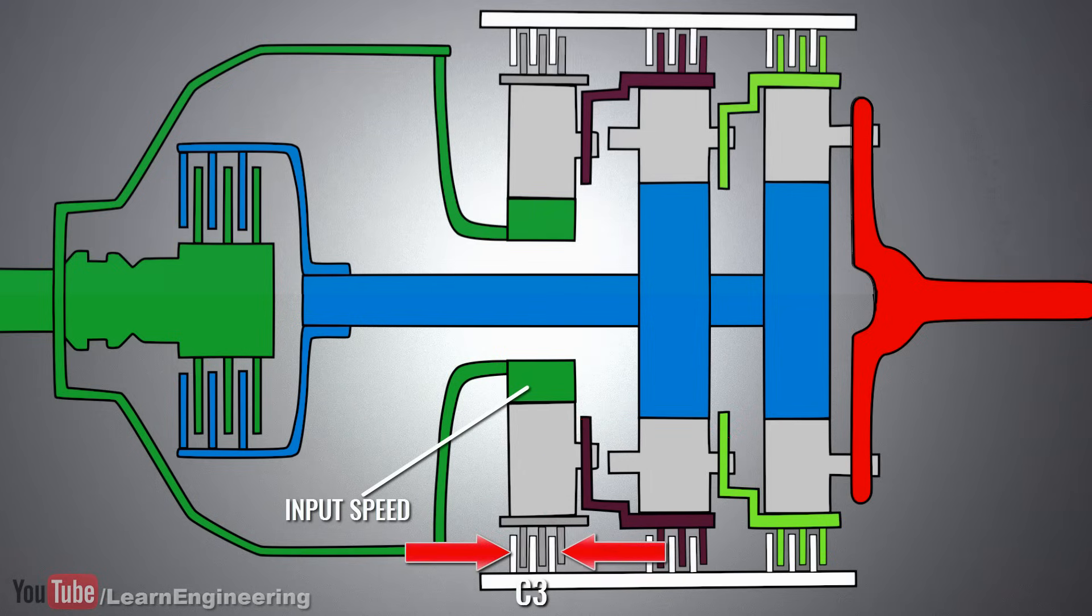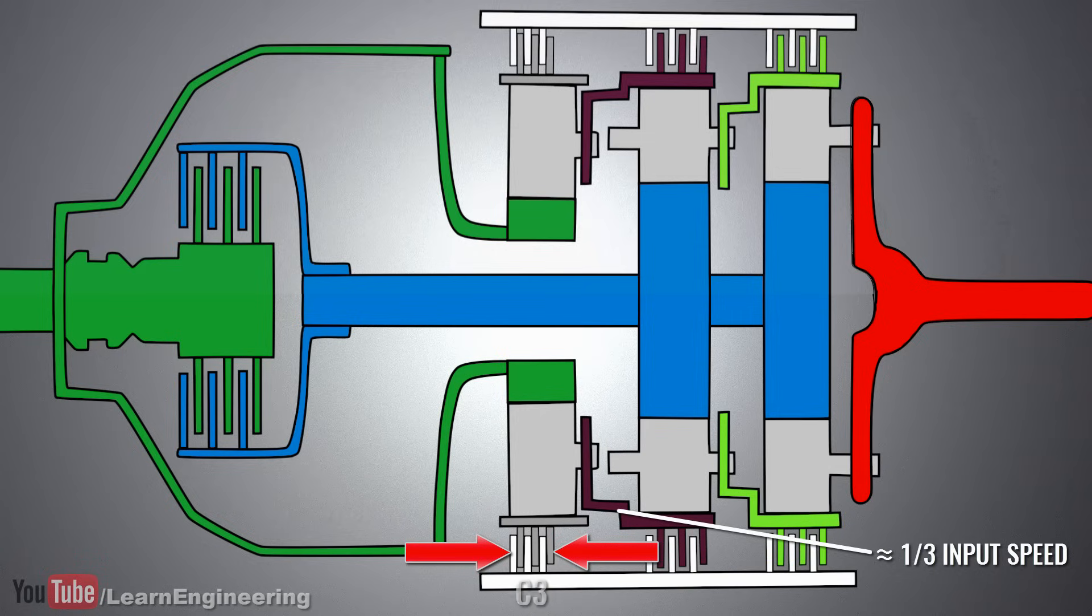For the remaining gear ratios, C3 is always applied. This means that the brown carrier or ring gear of the second set will turn at one-third of the input speed for the remaining cases.